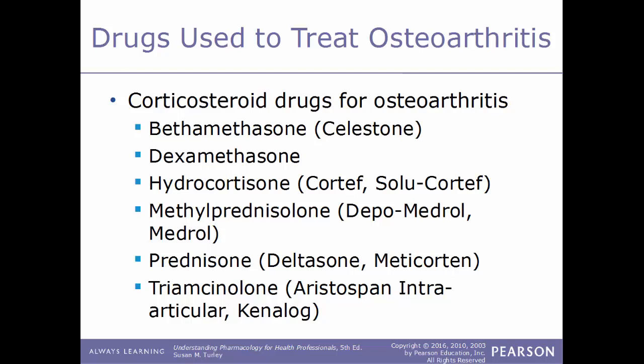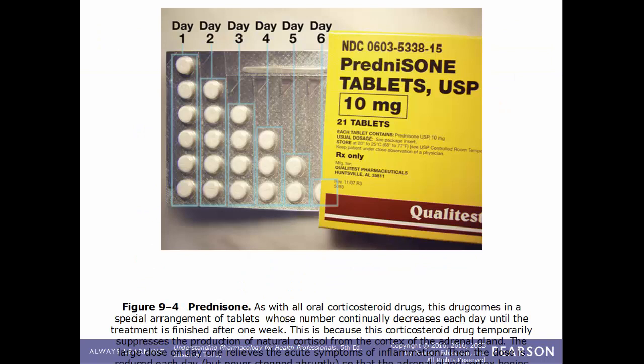Examples of corticosteroid drugs for osteoarthritis include: betamethasone known as Celestone; dexamethasone; hydrocortisone also known as Cortef or Solu-Cortef; methylprednisolone also known as Medrol or Depo-Medrol; prednisone known as Deltasone or Metacortin; and triamcinolone known as Kenalog or Aristospan Intraarticular. With prednisone packaging, it is important to follow directions carefully because the drug is tapered — day one has six pills, day two five, and so on — so directions must be followed exactly as prescribed to be fully effective.